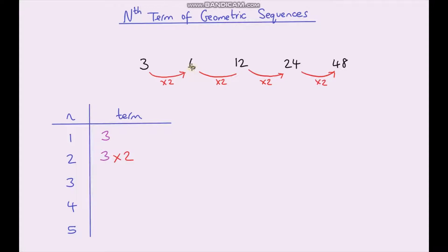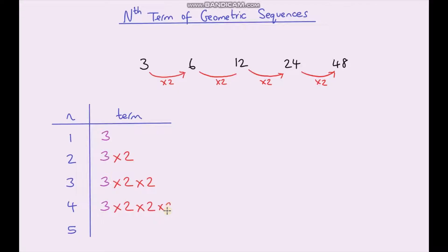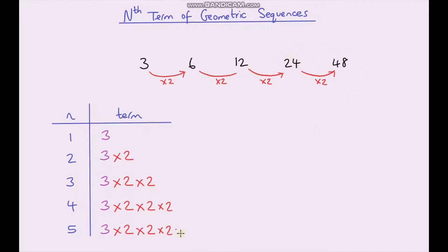Our third term is just our second term multiplied by two. Our fourth term is just our third term multiplied by two. And finally our fifth term — we're just taking the previous term and again multiplying it by two.